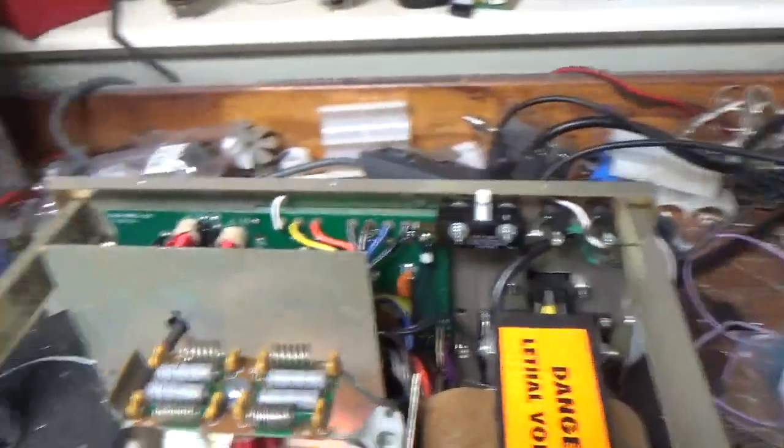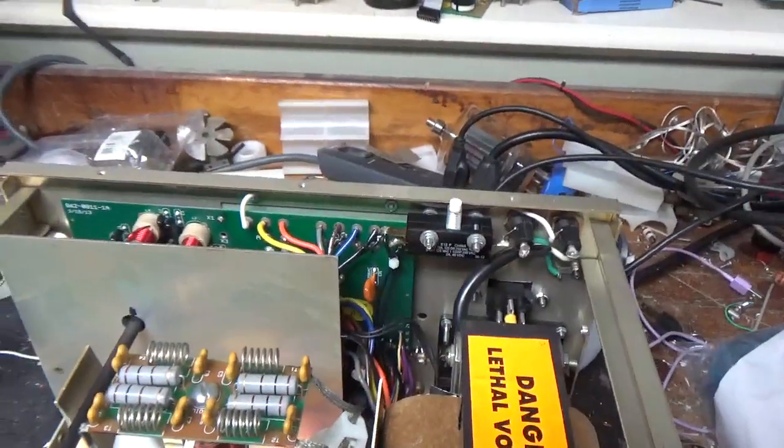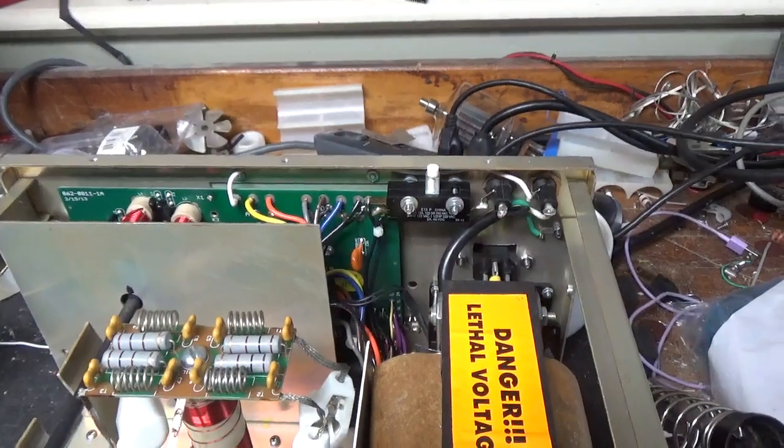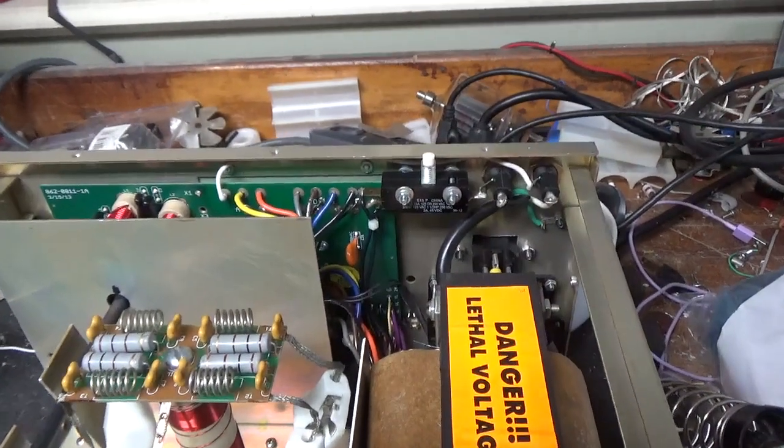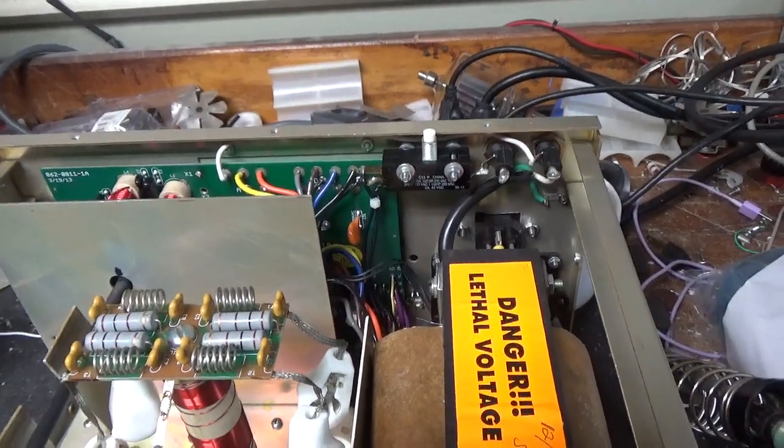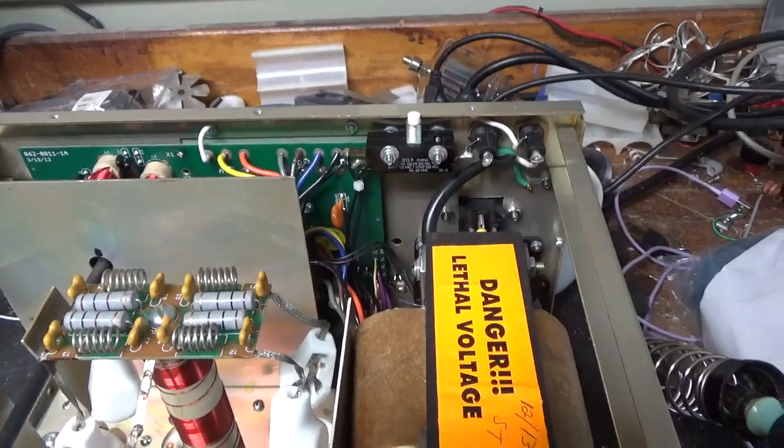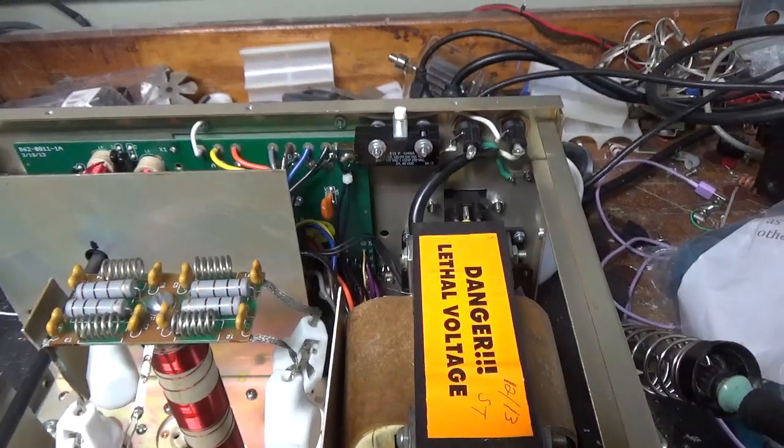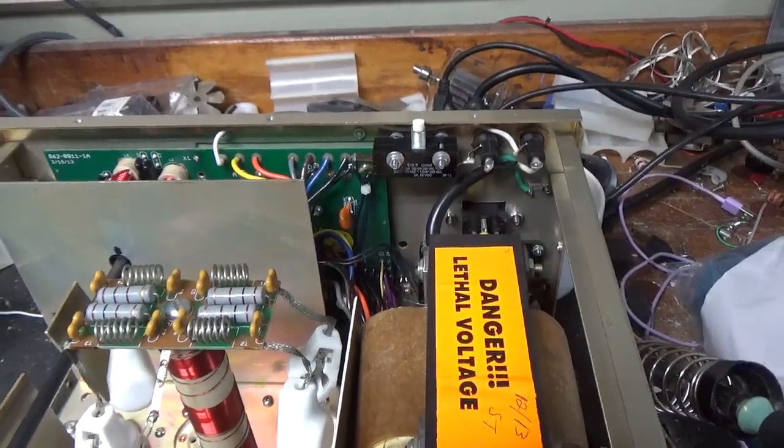So if you need an amplifier repaired, feel free to give me a call. Phone number is 203-892-4119. That's 203-892-4119. Website is amprepairguy.com and also harbachelectronics.com. Thanks for watching. Please like, share, and subscribe. 73.